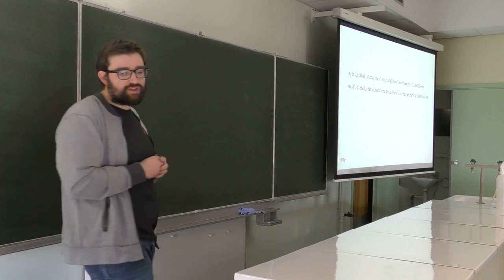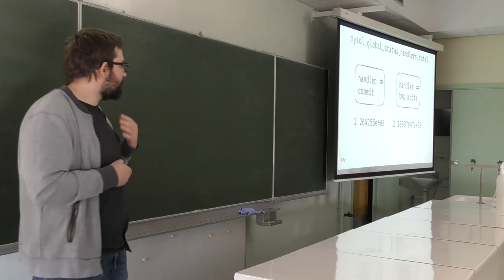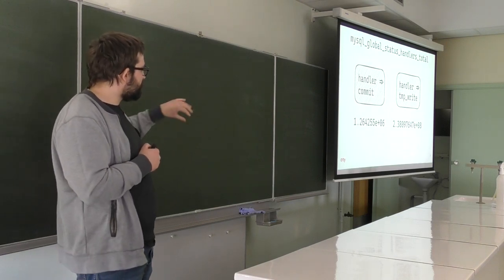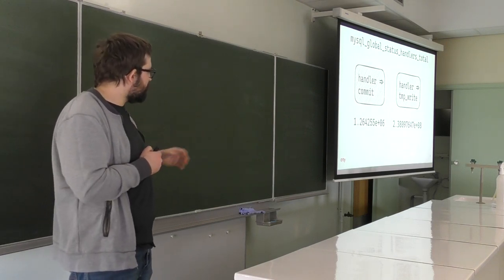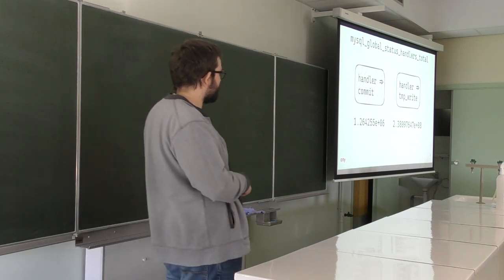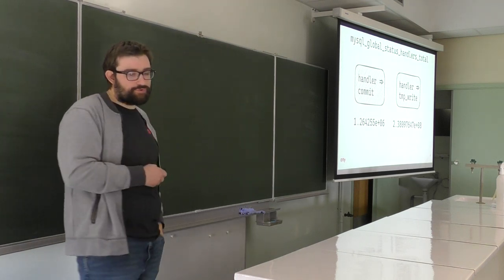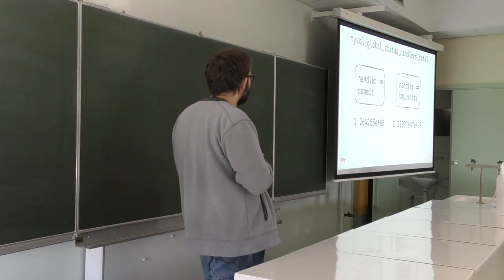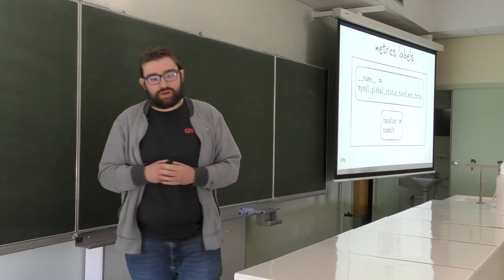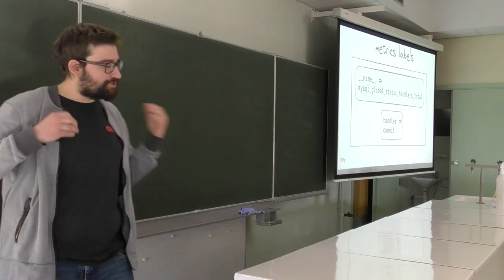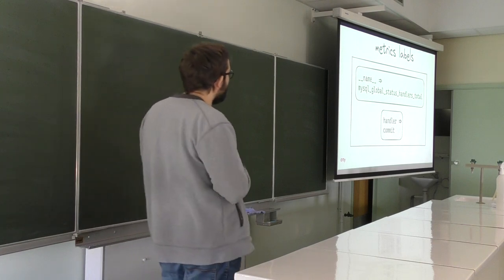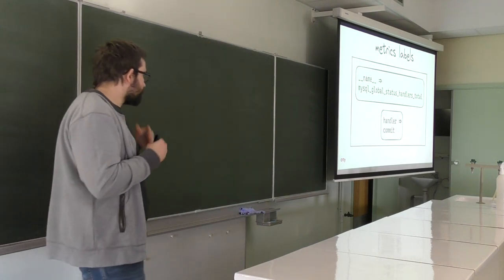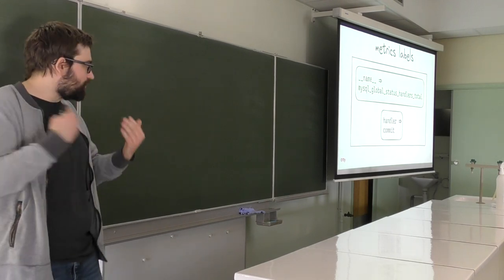One metric can have two different label values — you have commit with one value, and temporary with another value. Behind the scenes, the metric name is actually also a label — a special label in Prometheus called __name__. But on the display layer or when querying Prometheus, you don't have to use it; you can just write the metric name and Prometheus will know what you mean.